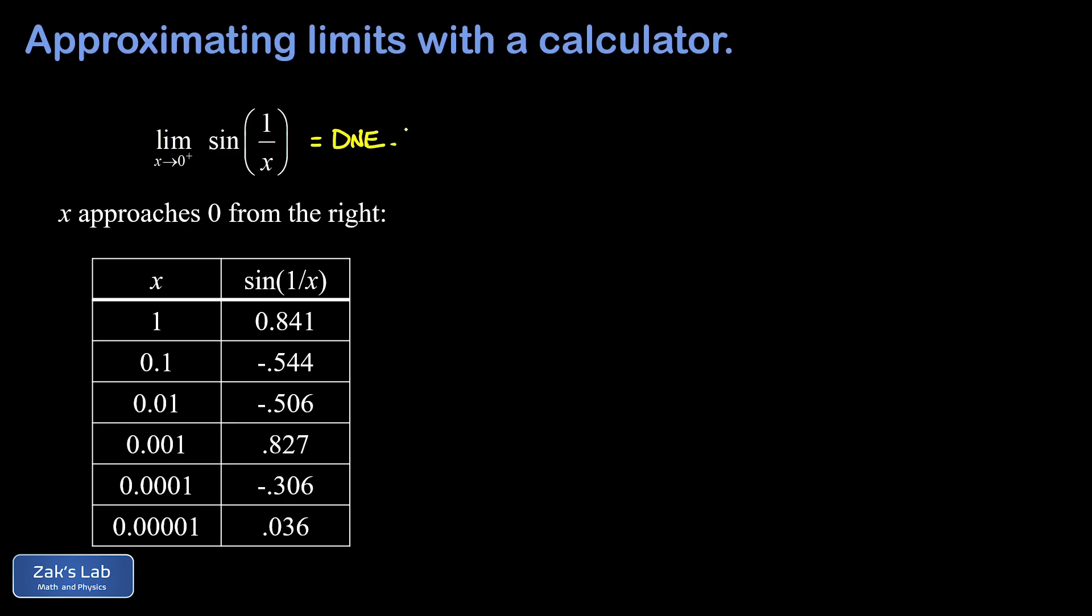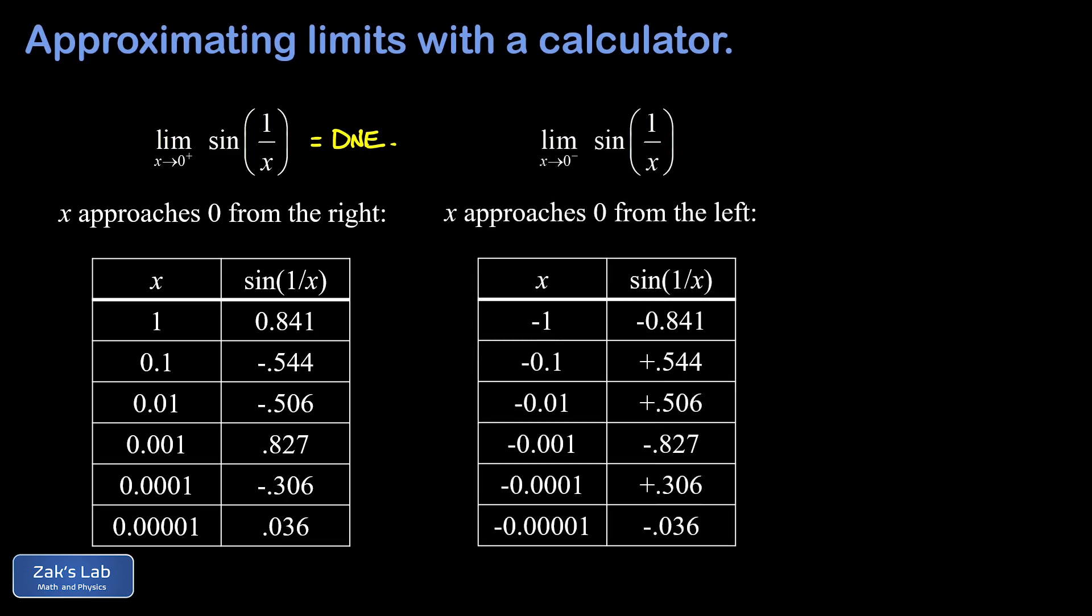Now note that that automatically implies the ordinary limit as x goes to 0 doesn't exist, but I do want to point out what happens if we approach 0 from the left. So we're going to use the same pattern, it's just we put minus signs on all the values of x. So negative 1, negative 0.1, negative 0.01, and so on.